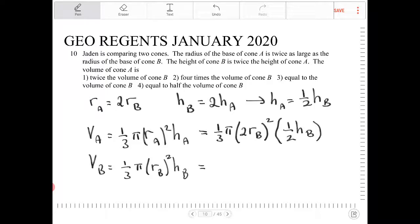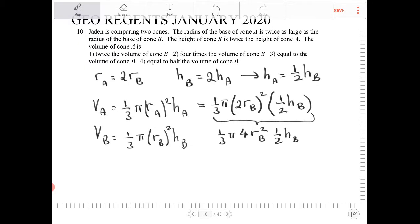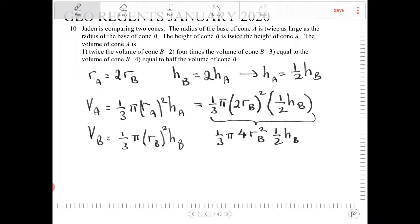So looking at this, I can then simplify the expression. So this all becomes one-third pi times 4RB squared times one-half HB. And I can simplify again. The 4 and a one-half just becomes a 2.